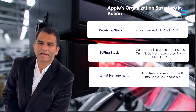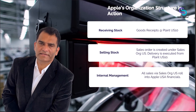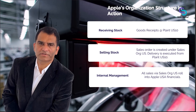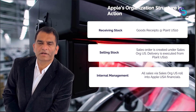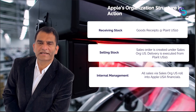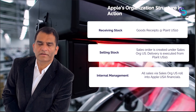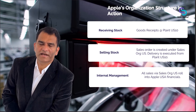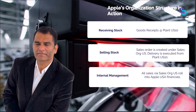Let's look at the internal management scenario. Apple can use the profit center or company code to analyze performance — for example, all sales via sales org US roll into Apple USA financials, which is helpful for local reporting.